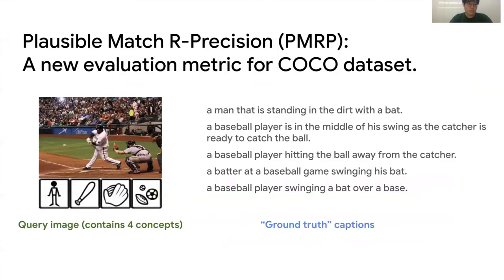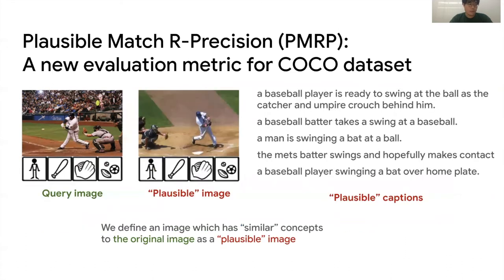So we propose a new evaluation metric for COCO captions, PMRP. This image has four concepts: human, bat, globe, and balls. We define an image as a plausible image if it has similar concepts with the query image. So we treat the captions of plausible images as pseudo-positives and measure the precision metric for evaluation.